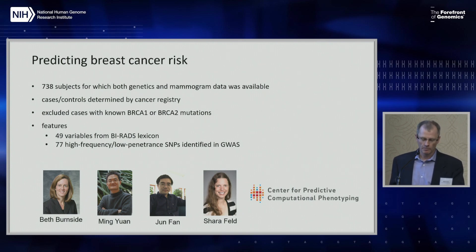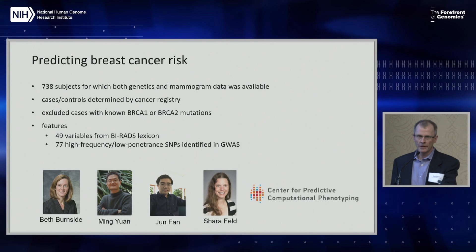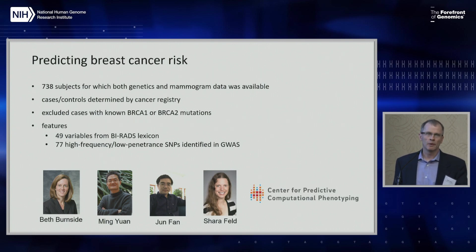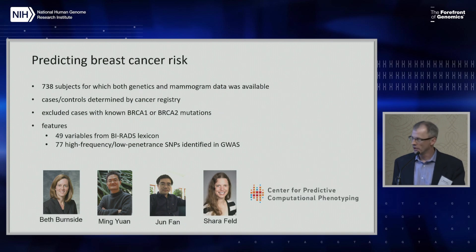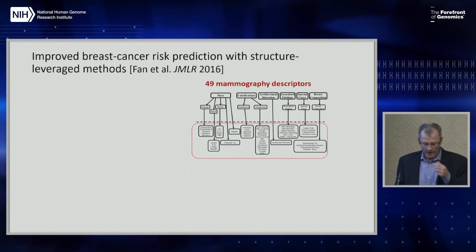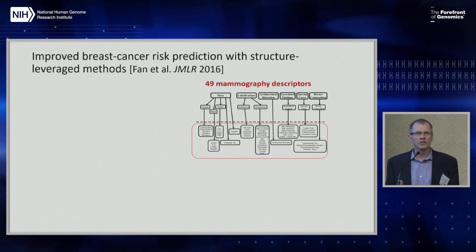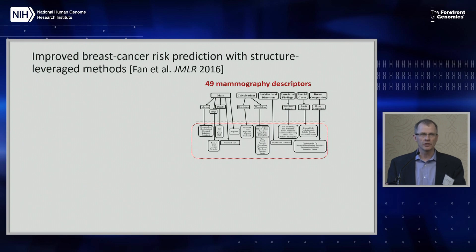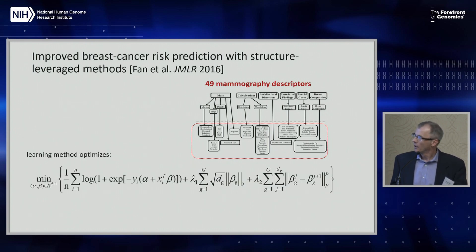A contrasting case comes from a study led by my colleague Beth Burnside on predicting breast cancer risk. They had subjects with both mammography data and SNP array data, with cases and controls from the cancer registry. One question was whether combining mammography and genetic data yielded better risk assessment, taking advantage of the known structure in both data types — including the hierarchy of BIRAD descriptors for mammographic findings.